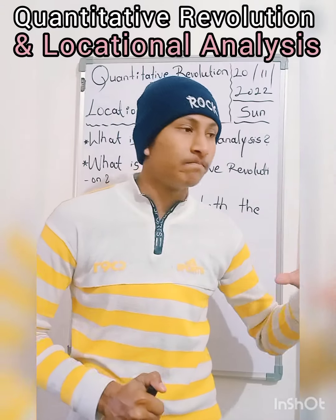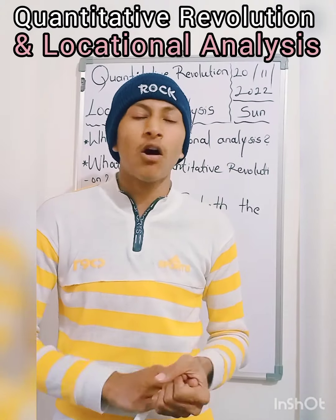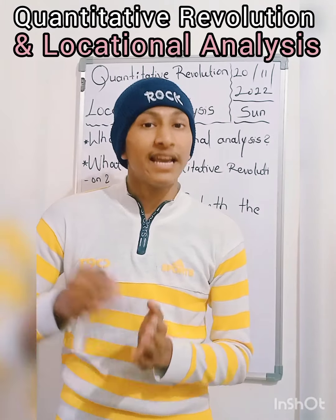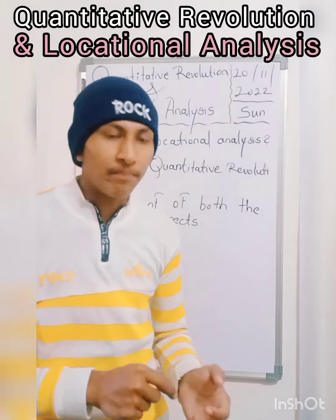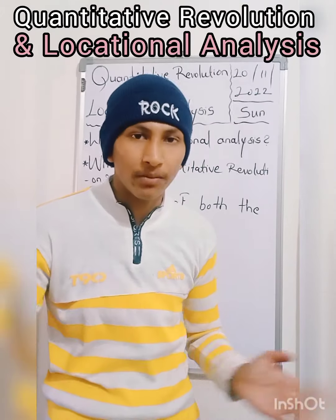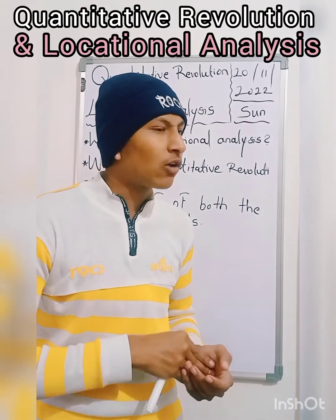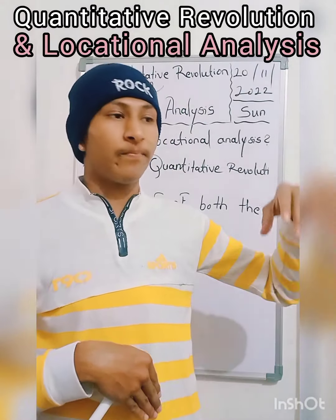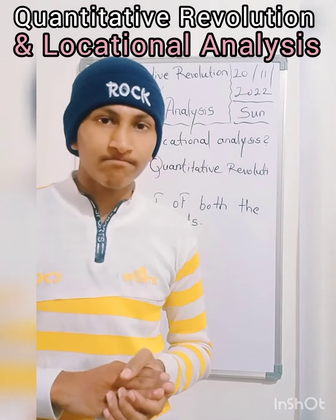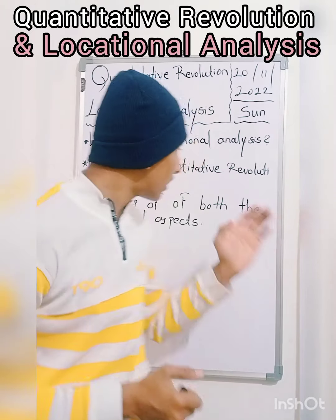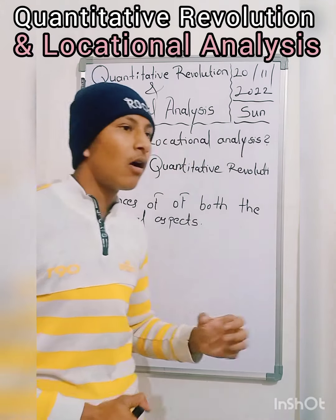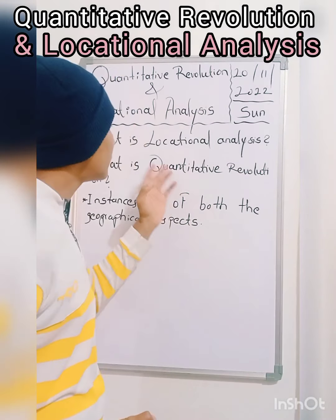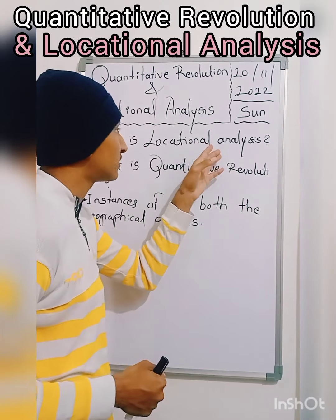But now, after the quantitative revolution appeared during the mid-19th century, we are giving exact locations and exact quantitative-based estimations. For example, now we say Akunkota and Solapur is between 45 kilometres — like that we are giving exact measurements now. After the quantitative revolution, we got to know the importance of quantitative revolution and the importance of locational analysis.